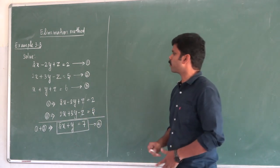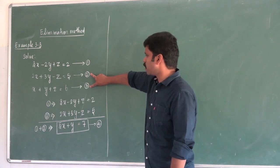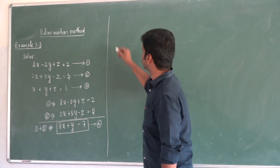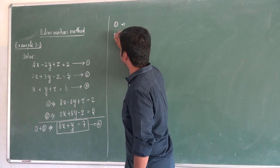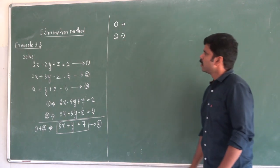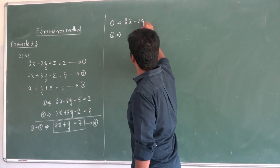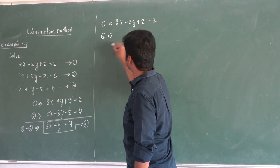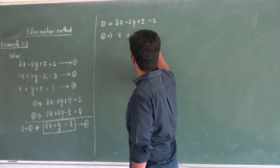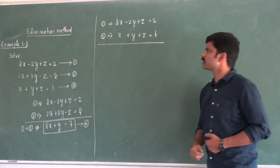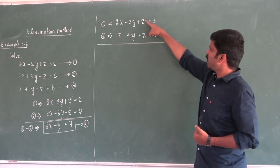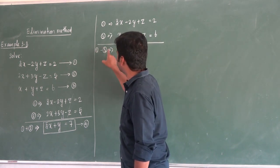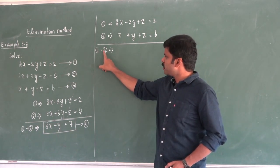So I will take equations 2 and 3 — or if you want, you can take equations 1 and 3. Please listen carefully. The first equation is 3x minus 2y plus z equal to 2, and the third equation is x plus y plus z equal to 6. So, first equation minus third equation: you multiply the third equation by minus.